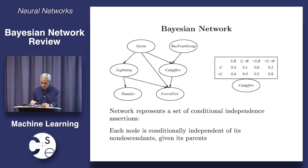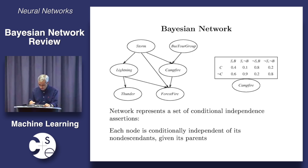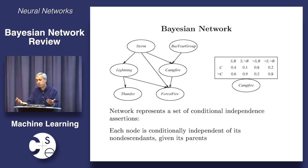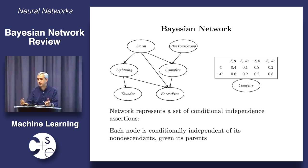And then the other thing that we have is that each node has a table that tells us what the conditional probability of that node is. So for example, the probability that we have a campfire given that there's a storm and no bus tour group is 0.1, which makes sense, right? Because if there's no tour group, there's probably no campfire. There could be somebody wandering through the woods without a group who could have laid a campfire, but that's less likely. So this is what a vision network is.